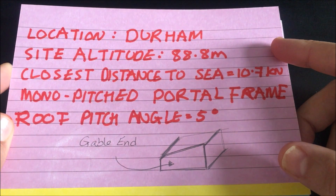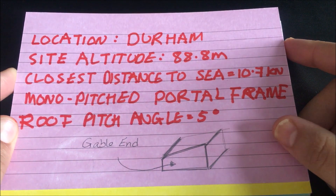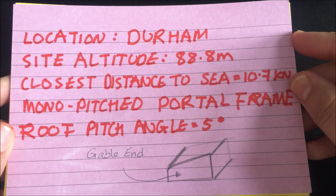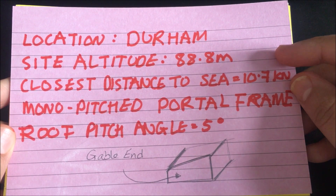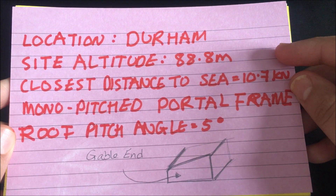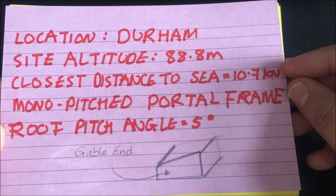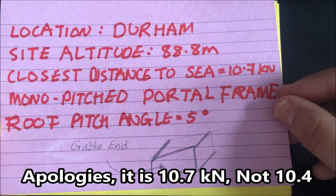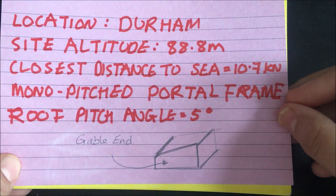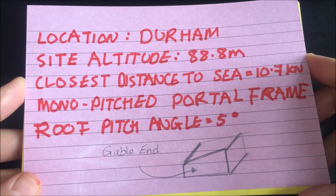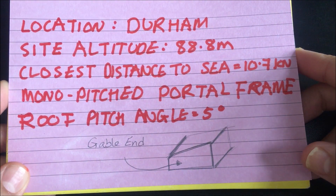I've looked this up — the exact address gives a site altitude of 88.8 meters. The definition of altitude is the height above sea level of the location, so the vertical distance from sea level to the location is 88.8 meters. The closest distance to the sea from the location is 10.4 kilometers. You also need to know that it's a monopitched roof — meaning a single sloping roof surface — and the roof has a pitch angle of five degrees.